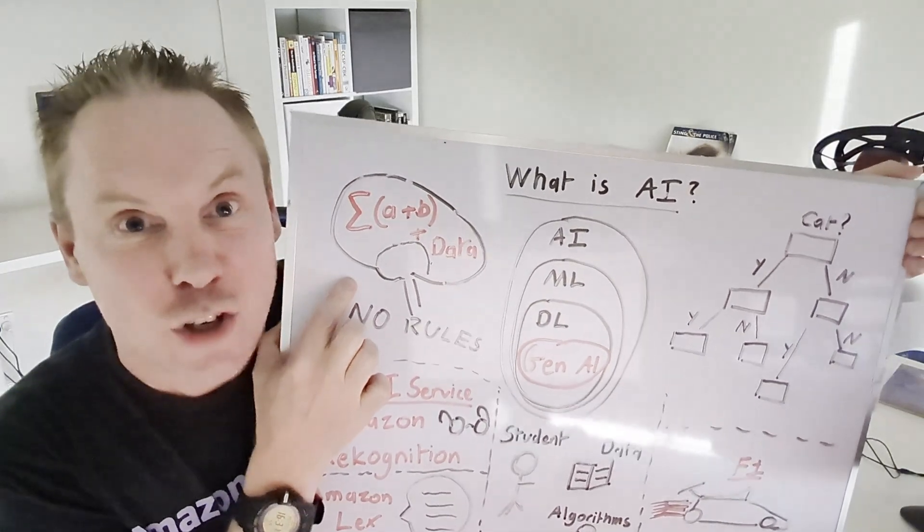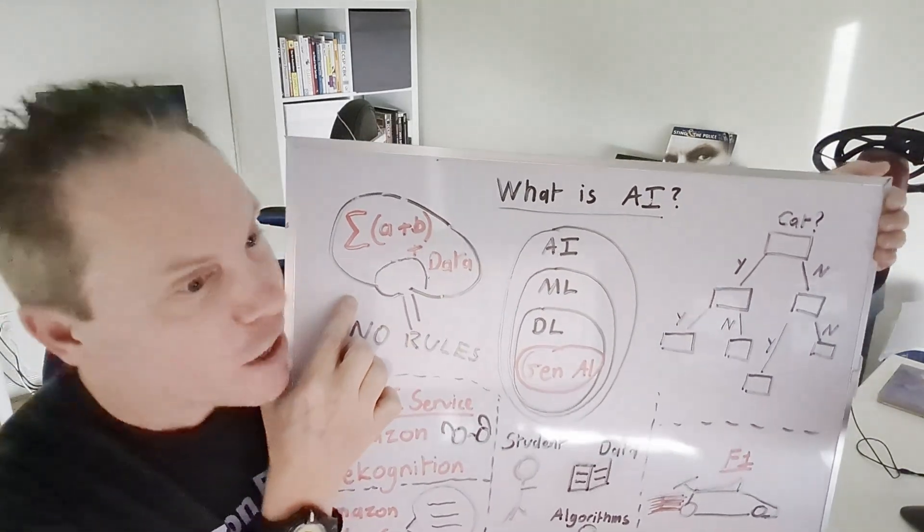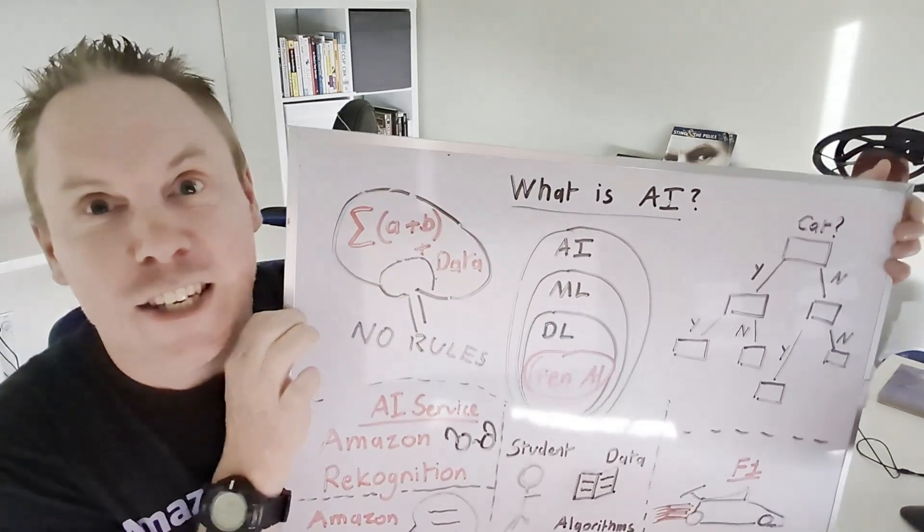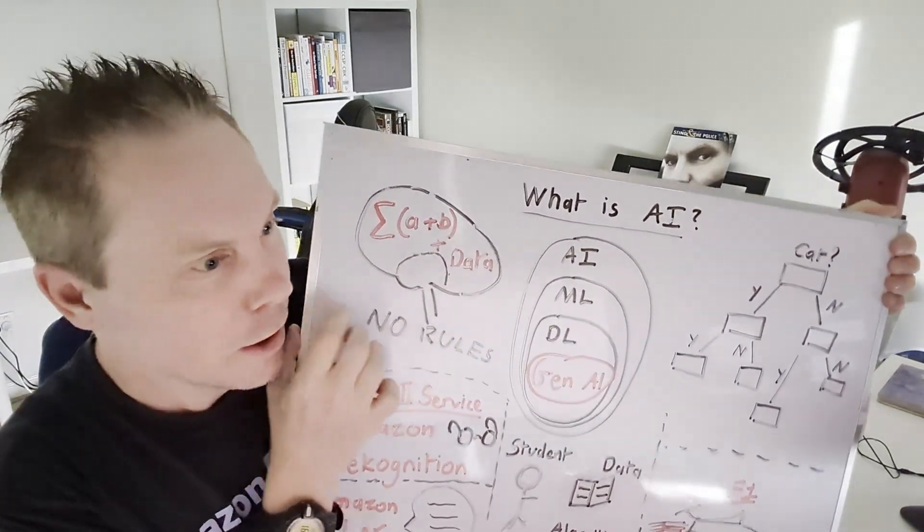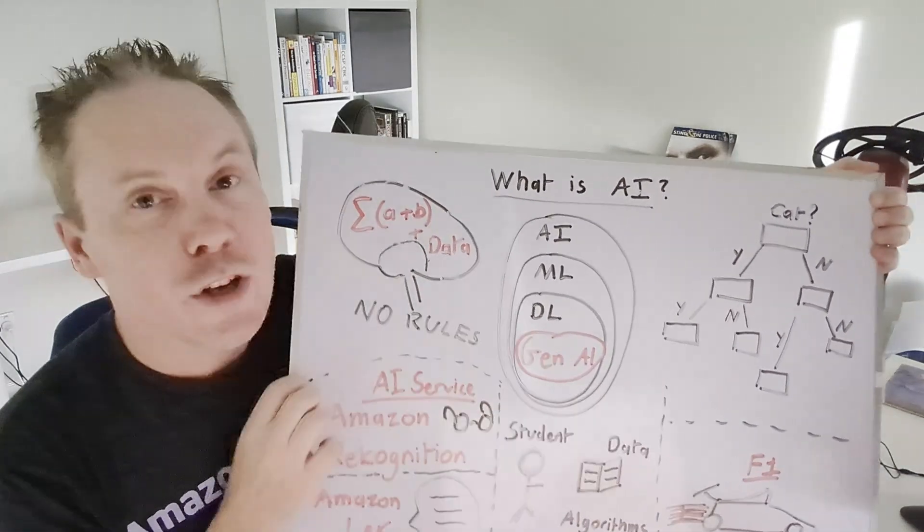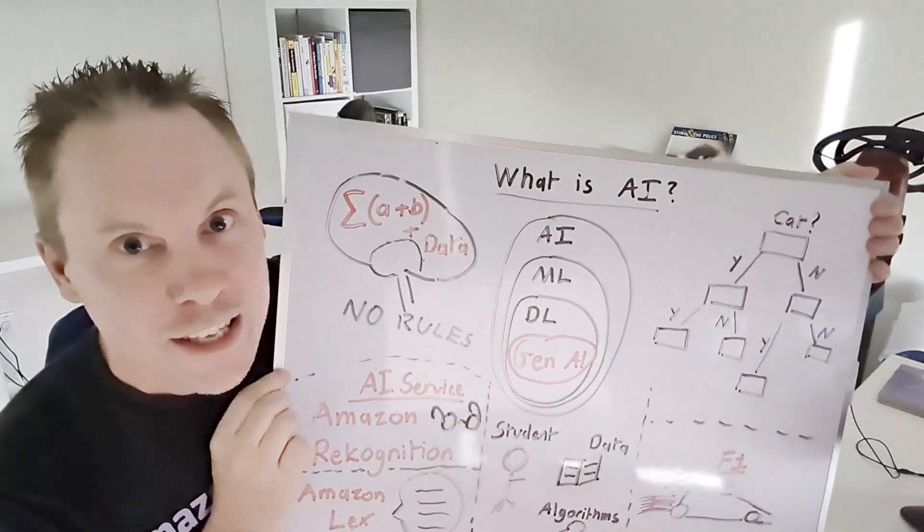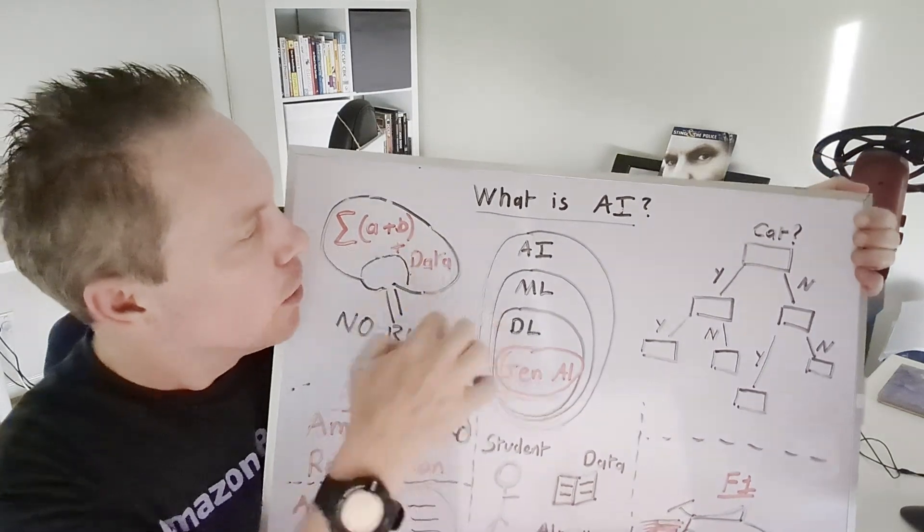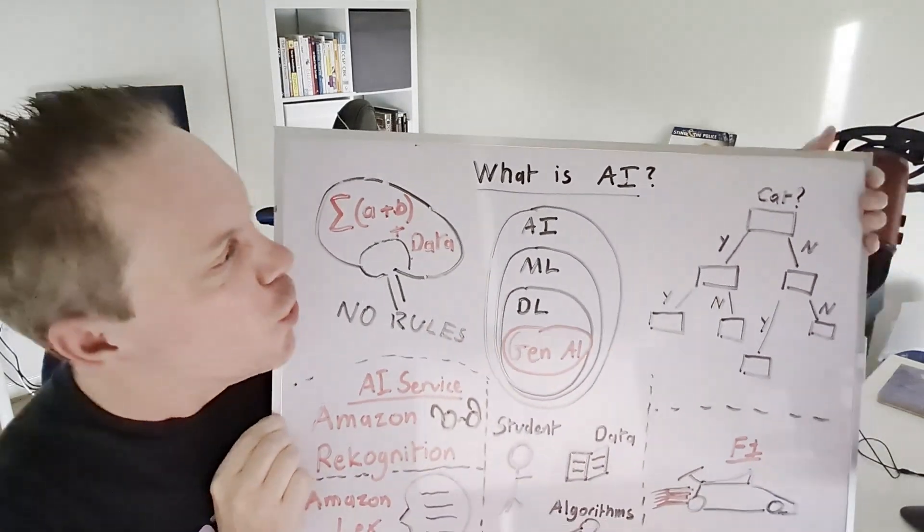Artificial intelligence or AI is like giving a computer a brain, but instead of squishy grey matter we've got algorithms and data. We don't need to actually program any rules. Instead, the technique that we're using learns itself.